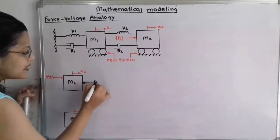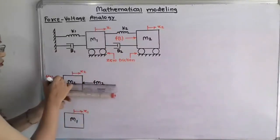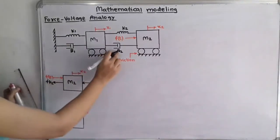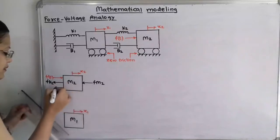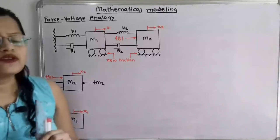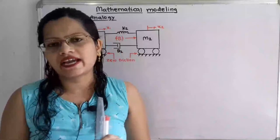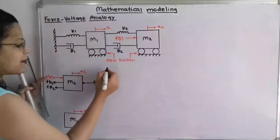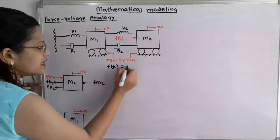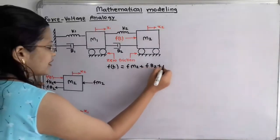The inertia force due to mass M2 I will call FM2. The reaction force due to spring K2 I will call FK2. The reaction force due to damper B2 I will call FB2. According to Newton's second law of motion, applied force equals the sum of reaction forces. So F(t) equals FM2 plus FB2 plus FK2.